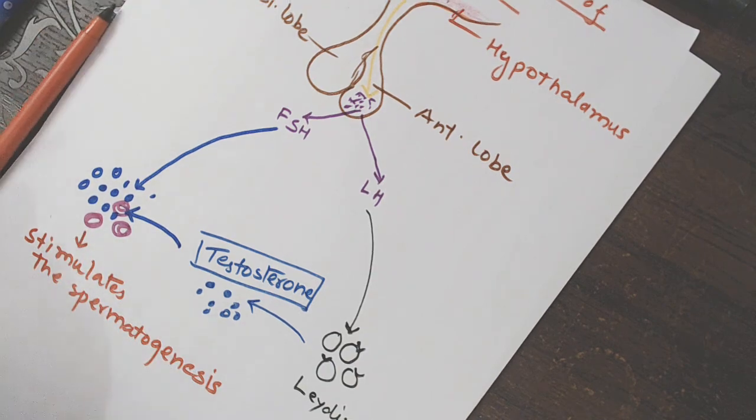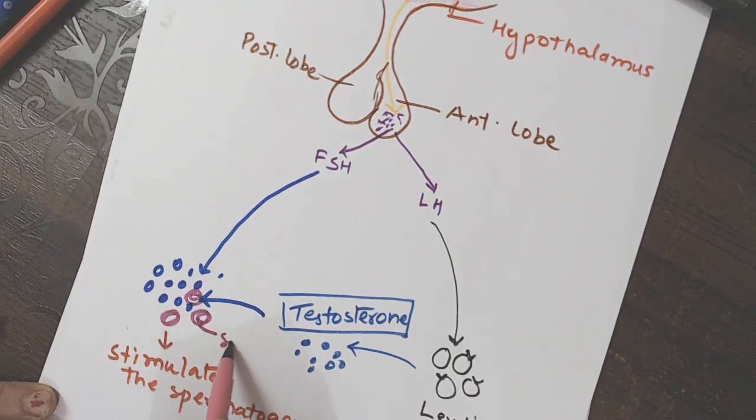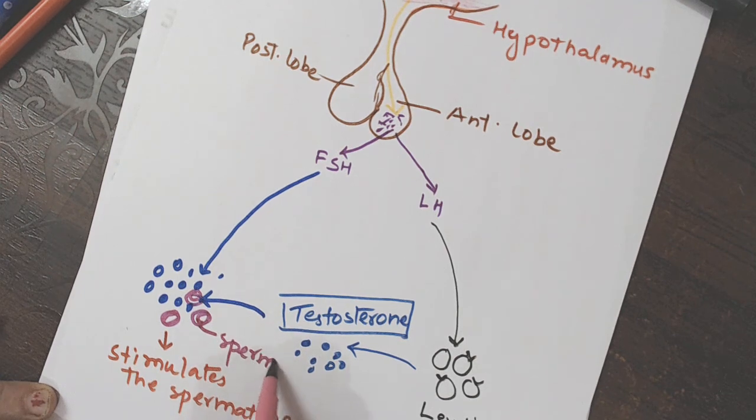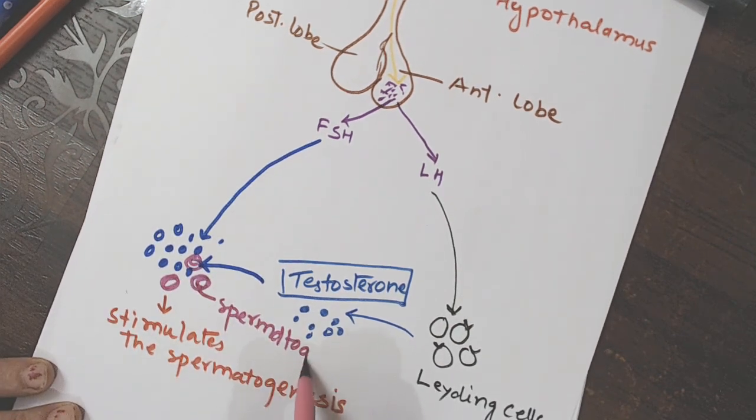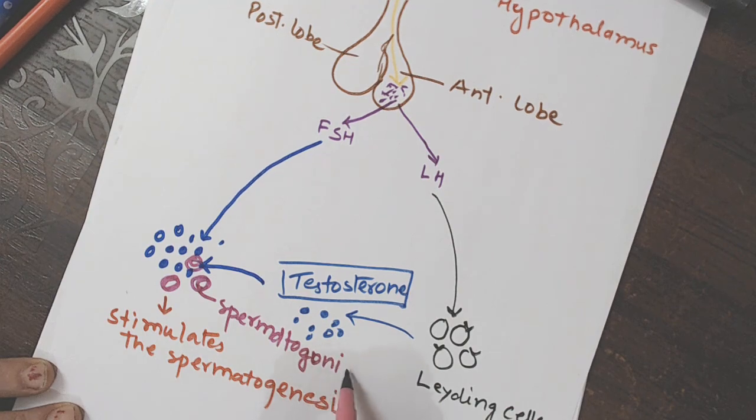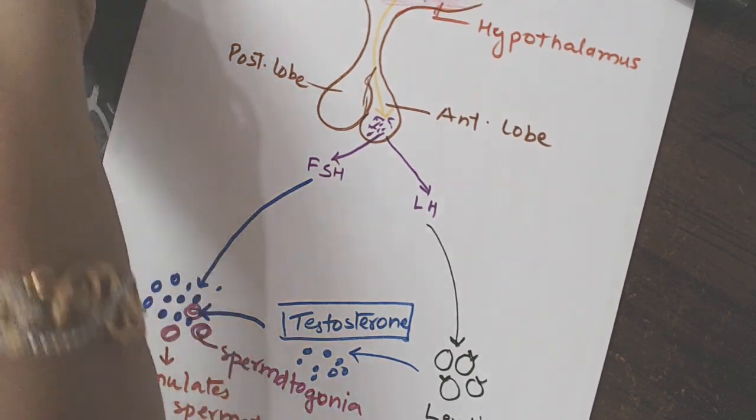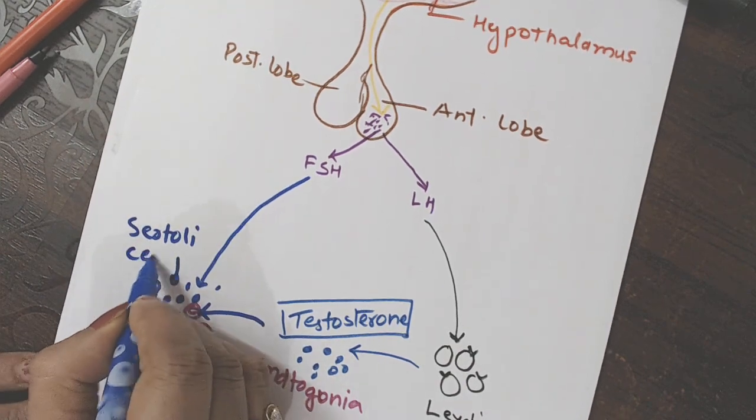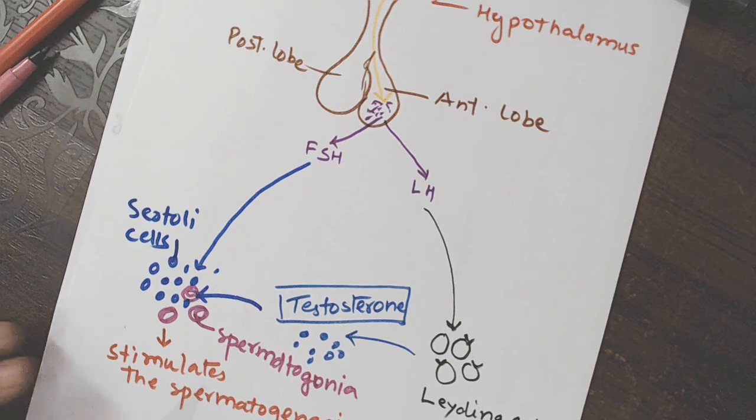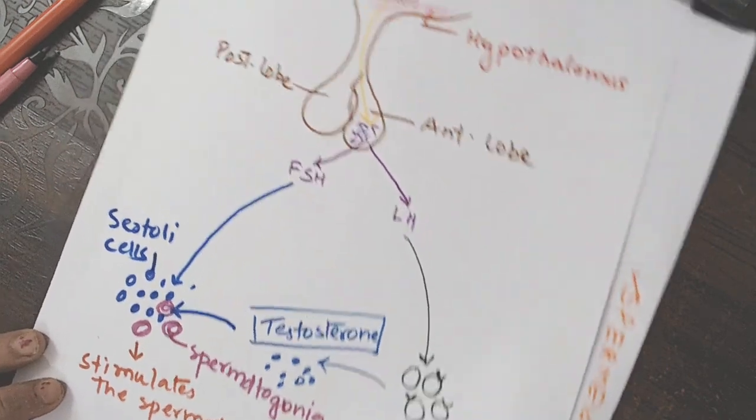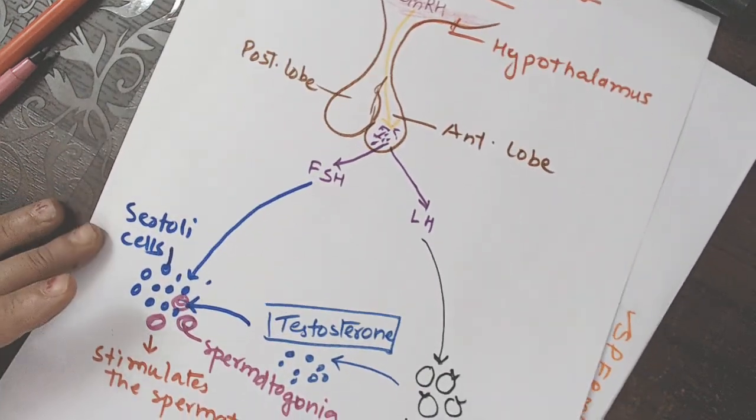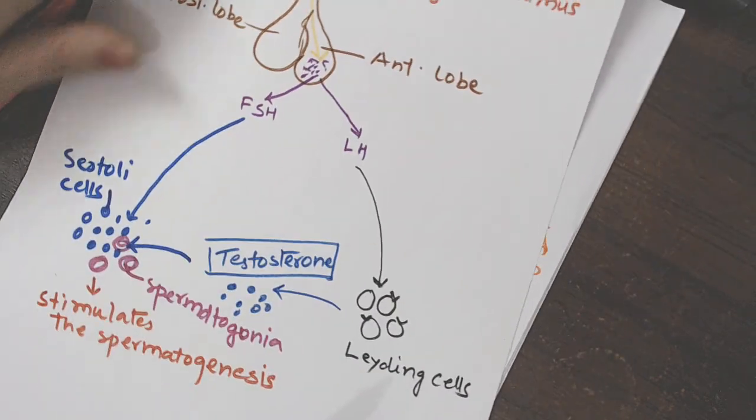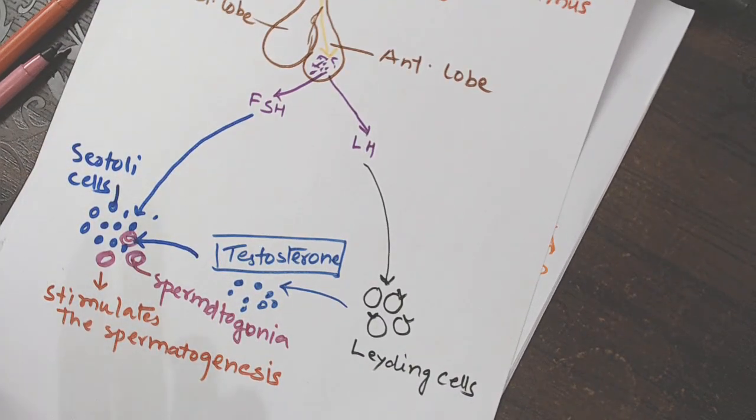Testosterone also acts on Sertoli cells and the secretion of Sertoli cells stimulate the process of spermatogenesis in spermatogonial cells. So these pink cells are spermatogonium. And these blue cells are Sertoli cells. Is that clear? Okay now I hope this is clear in your mind so next time I am going to explain the structure of sperm till then bye-bye bye-bye.